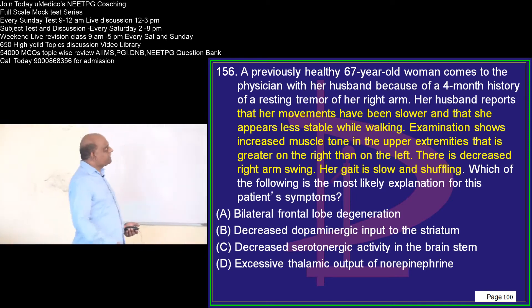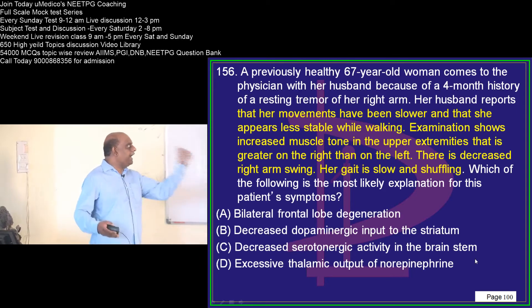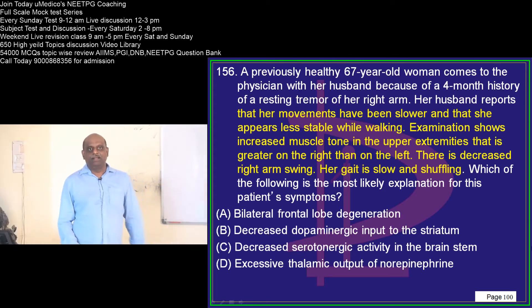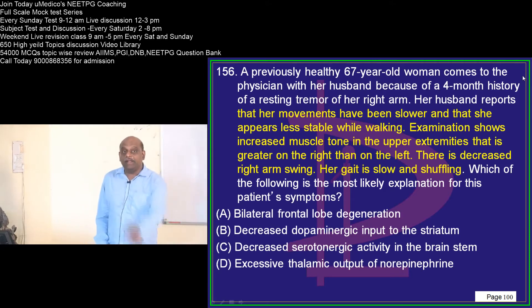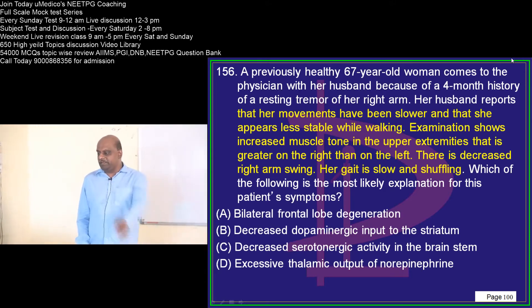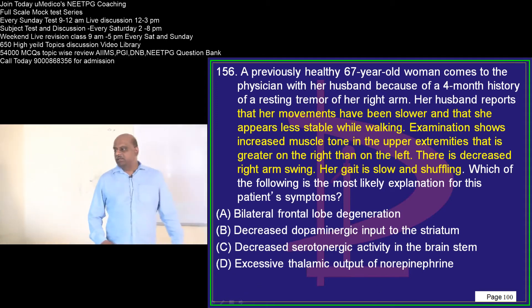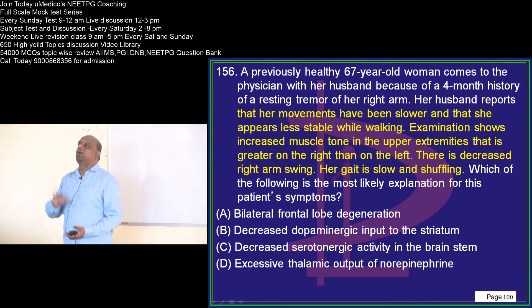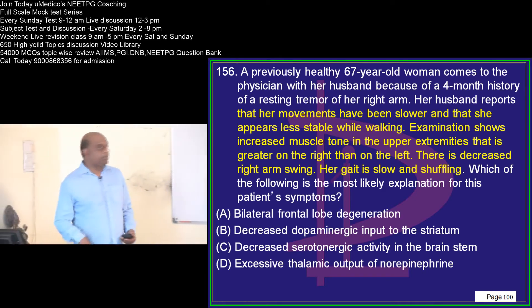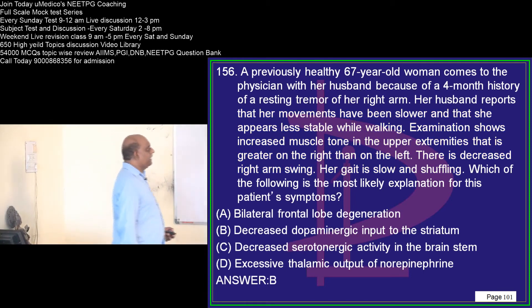A previously healthy 67-year-old woman presents with increased muscle tone in the upper extremities, greater on the right than the left, and decreased right arm swing. Whenever the right arm swing decreases, there is a high likelihood of Parkinsonism. Parkinsonism is due to decreased dopaminergic input into the striatum — that is what you have to remember.